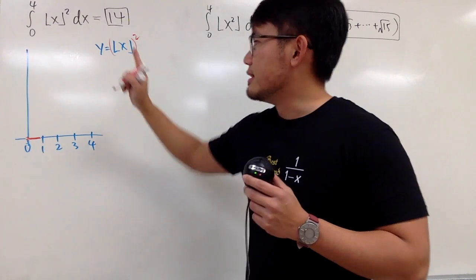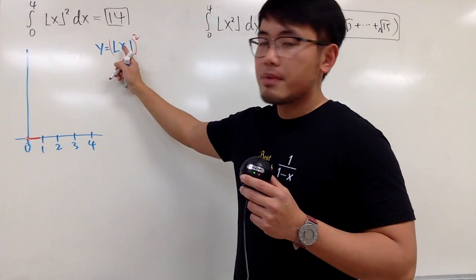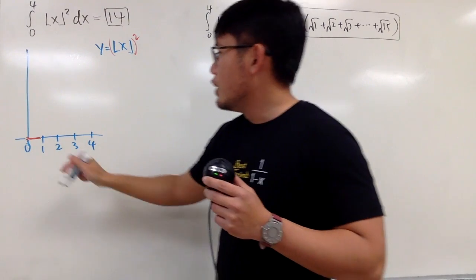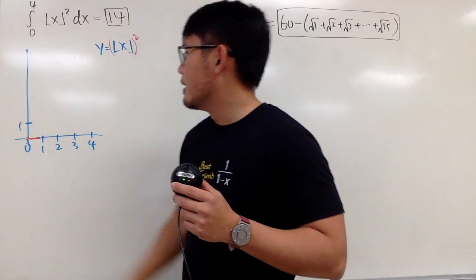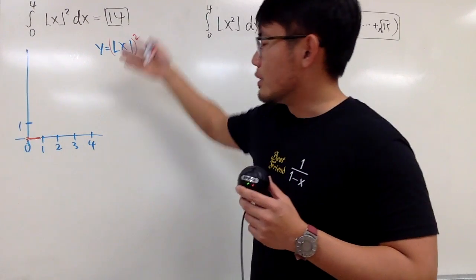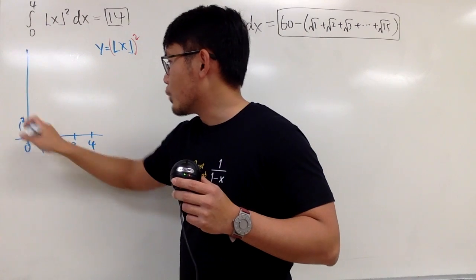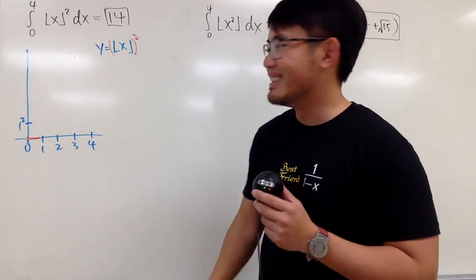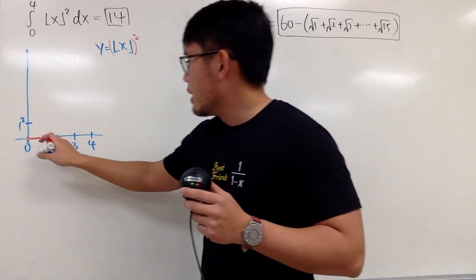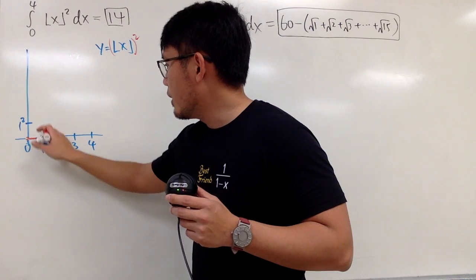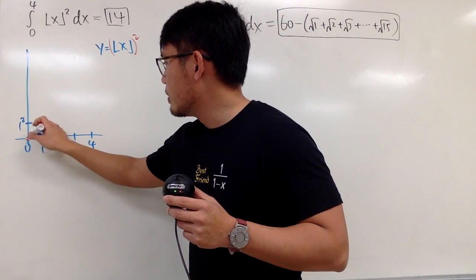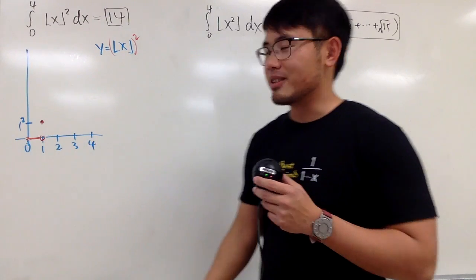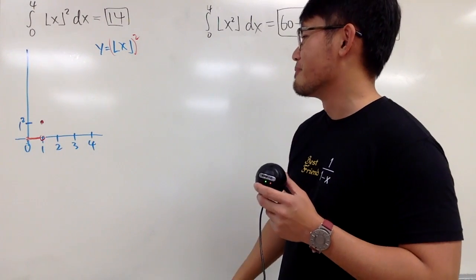But when x is exactly 1, the floor of 1 is 1, and you square that, you will jump to 1 — that's 1 squared. I will put down an open circle and a closed circle right here. There's a jump, a discontinuity right there.